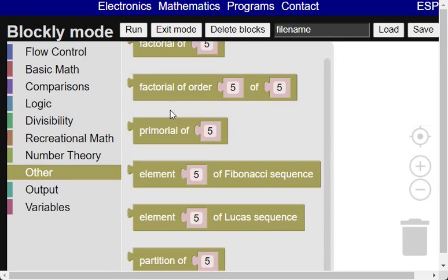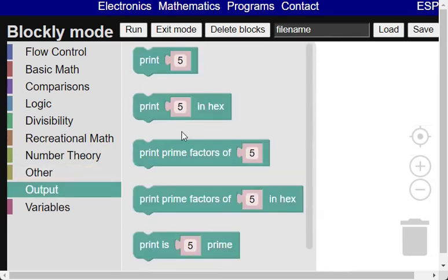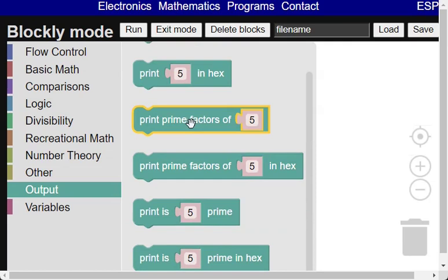Other blocks. This includes blocks not in another category. Output: these blocks can show or factor the expression in decimal or hexadecimal, and there is another block that shows whether the number is prime or not.